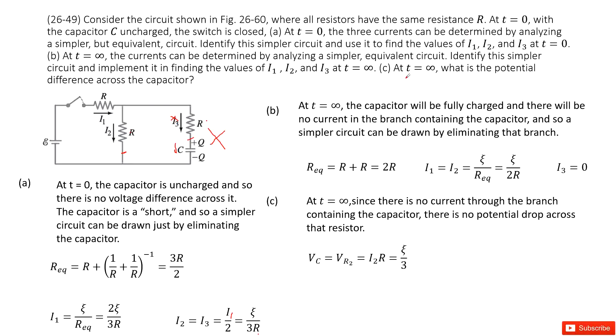The third part asks you as t tends to infinity, what is the potential difference across the capacitor? So that is easy. We can see the potential difference for the capacitor is in these branches. And in these branches, we can see there is no current going through the resistor. So that means there is no voltage decrease by this resistor.